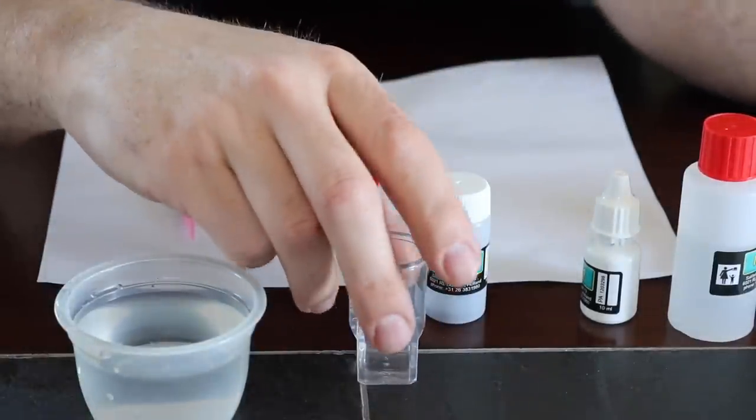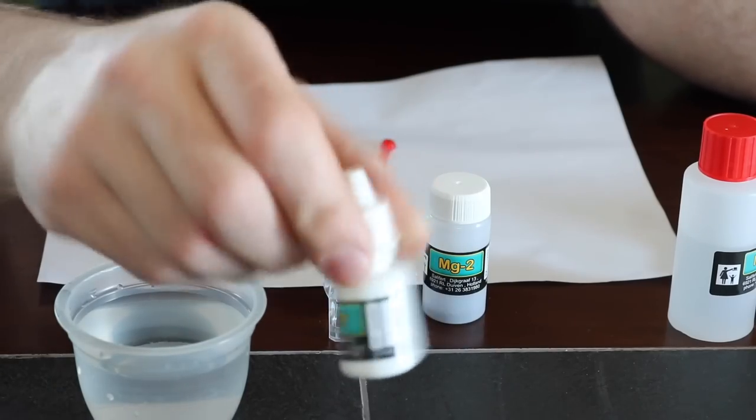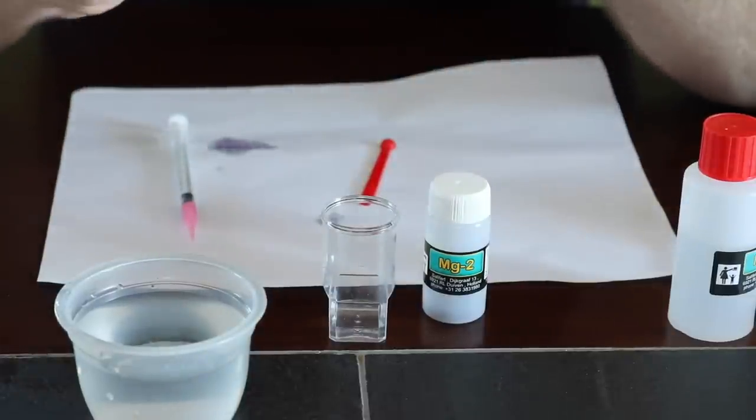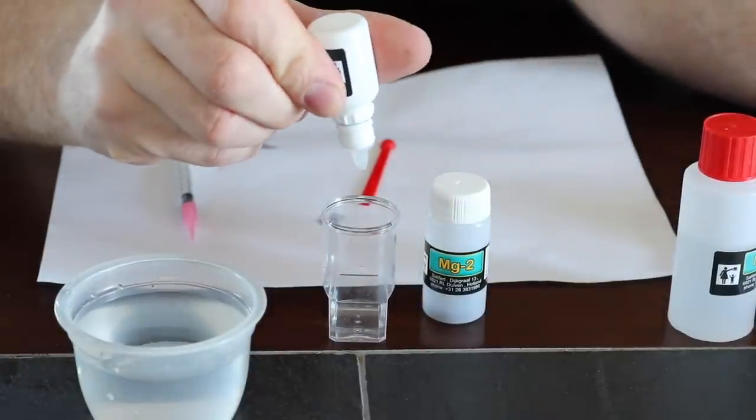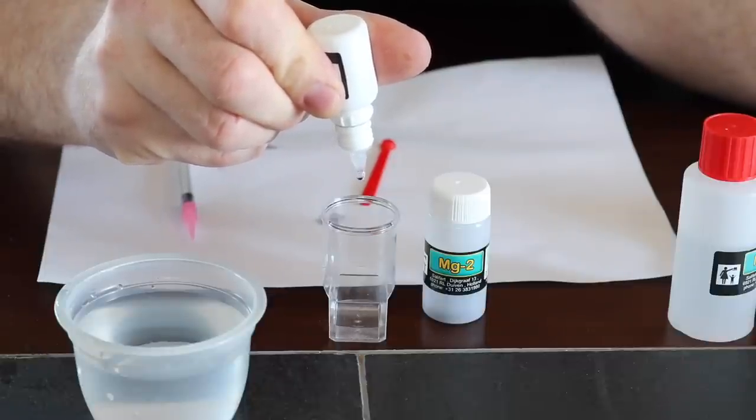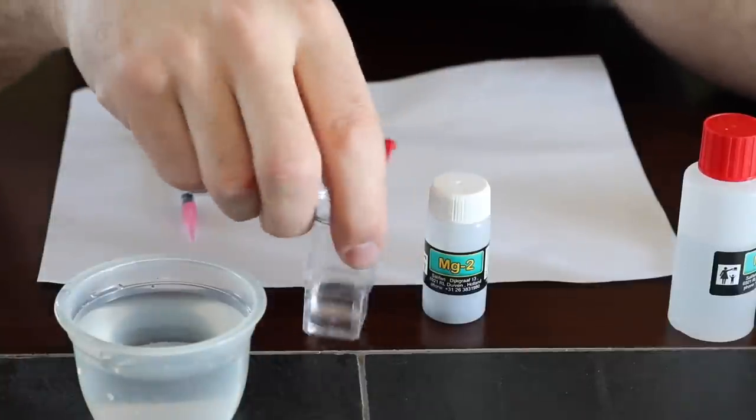So what we're going to do now is we're going to take the MG1 and we're going to add five drops. We'll just shake that up a little bit and make sure everything's mixed. So we're going to add five drops to our test sample. One, two, three, four, five. Alright, and we're going to put that one to the side and we're going to mix this for 30 seconds.